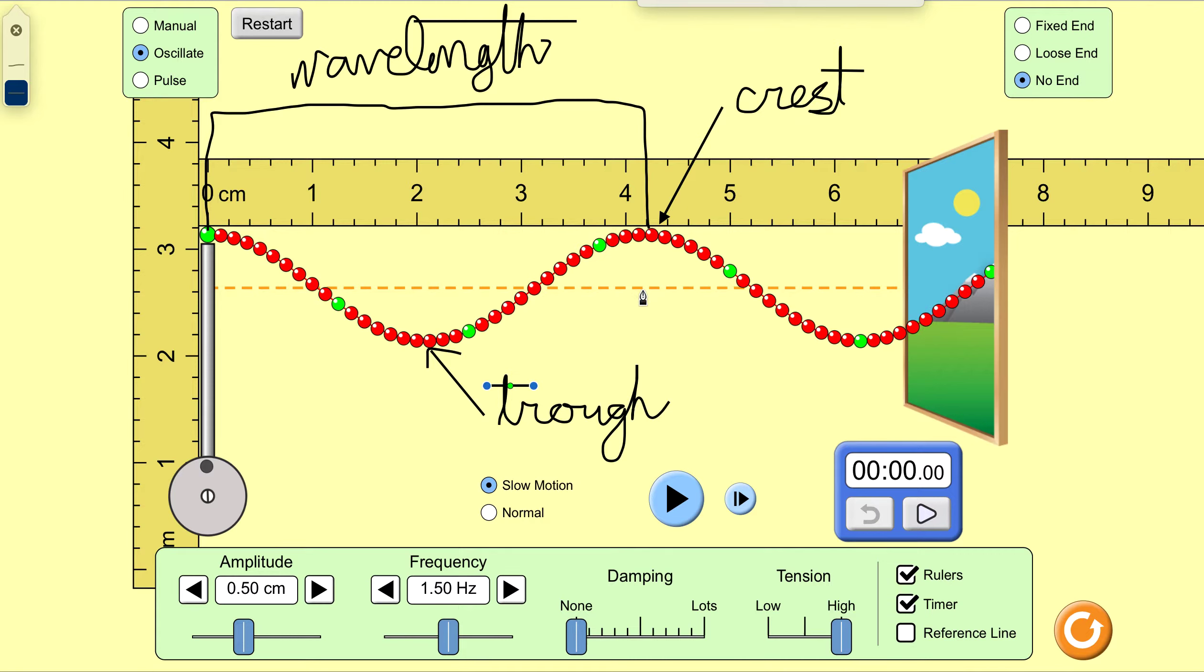It is from the center of the wave, sort of where the wave would be if there were no wave, or where the chord would be if there were no wave, to how far it's gone up. That is called amplitude.